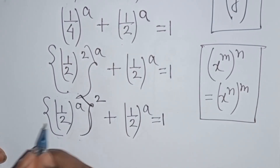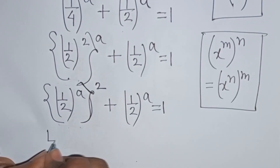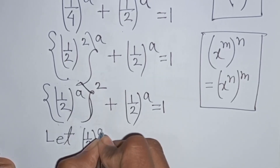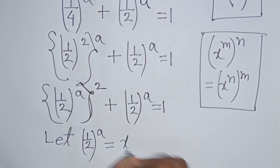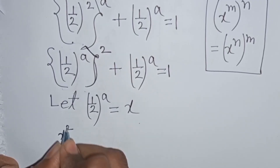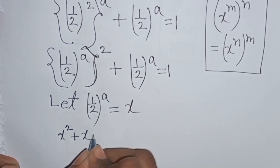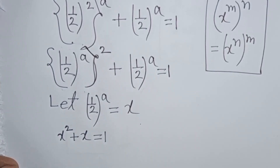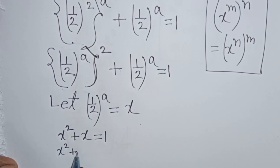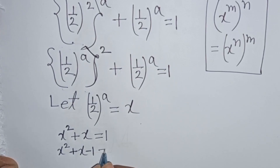We see (1/2)^a appears in both terms. Let (1/2)^a be substituted by x. So our equation becomes x squared plus x equals 1. Rearranging, x squared plus x minus 1 equals 0.